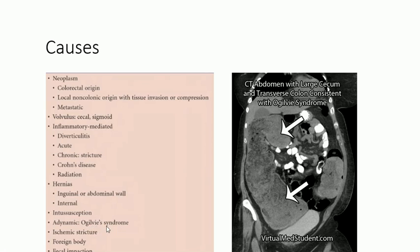Ogilvie's syndrome — on CT scan there is dilatation of the cecum and proximal transverse colon with no actual mechanical obstruction causing this dilatation. There is actually a neural problem; the exact etiology is not known — it could be infective or medicinal causes. It is an entity very similar to paralytic ileus — a motility disorder — called Ogilvie's syndrome.